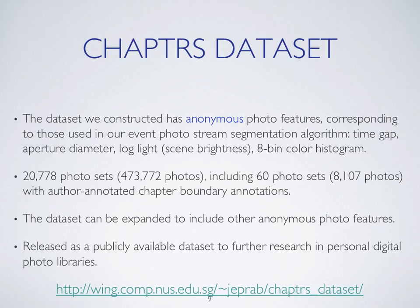Now let's examine some artifacts and analysis of the Chapters dataset. Our dataset is completely anonymized — we do not have the photos themselves. We have generated photo features used in our event photo stream segmentation algorithm, including time gap, aperture diameter, log light or scene brightness, and an 8-bin color histogram. These datasets can be expanded to include other types of anonymous photo features in the future, and our dataset is publicly available for further research in personal digital photo libraries at the URL shown.